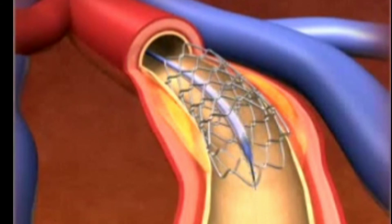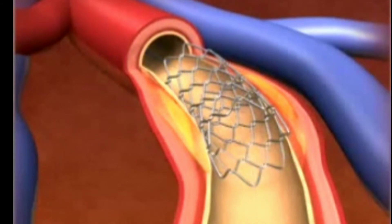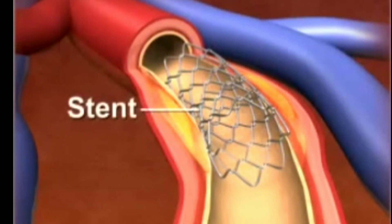Both catheters and the wire are then withdrawn. About 70 to 90% of coronary angioplasty includes placement of a stent, a wire mesh tube that holds open weakened arteries.